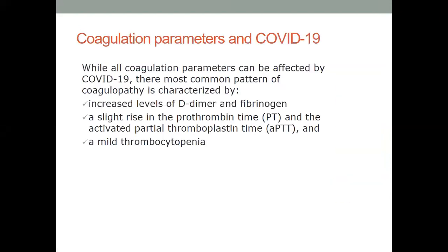I'll briefly go through the other coagulation parameters affected in this coagulopathy. All coagulation parameters are affected by COVID-19, but the degree and pattern of affection varies throughout the disease course. Characteristically, COVID-19 associated coagulopathy shows an increased level of D-dimer and fibrinogen, and a slight rise in prothrombin time and activated partial thromboplastin time. The PT change may be missed if reported as INR rather than in seconds.